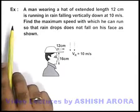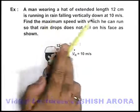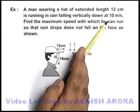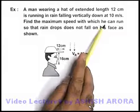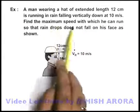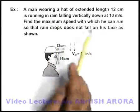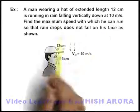In this example, we are given that a man wearing a hat of extended length 12 centimeter is running in rain falling vertically down at 10 meters per second. Find the maximum speed with which he can run so that the rain drops does not fall on his face as shown.